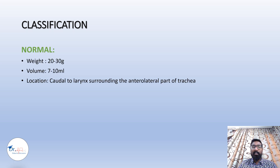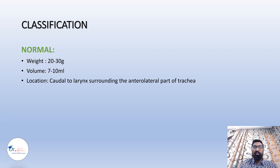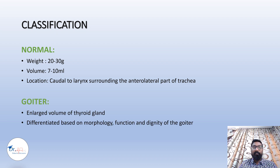Before classifying goiter, we need to know about the normal thyroid gland. The normal thyroid gland weighs about 20 to 30 grams and its volume is 7 to 10 ml. It is located caudal to the larynx, surrounding the anterolateral part of the trachea.